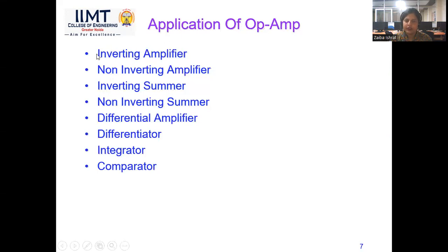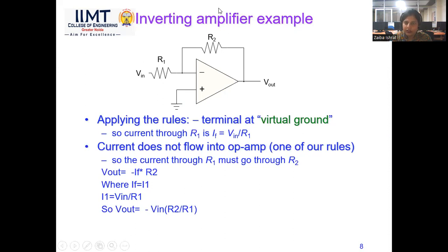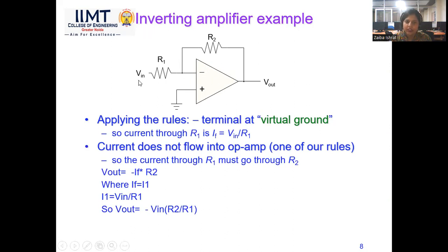The first application is the inverting amplifier. As the name indicates, it is used to amplify the input signal Vin to get a larger output Vout, using negative feedback topology. The output is fed back to the input through feedback resistance R2. The input voltage is applied at the inverting (minus) terminal, and the non-inverting terminal is grounded. The inverting amplifier amplifies the signal with a 180-degree phase shift between input and output.